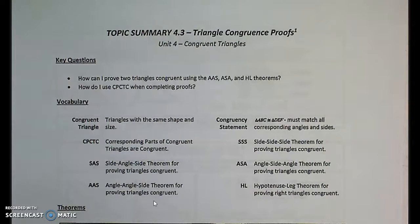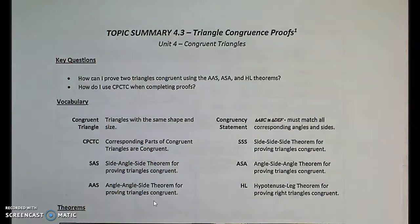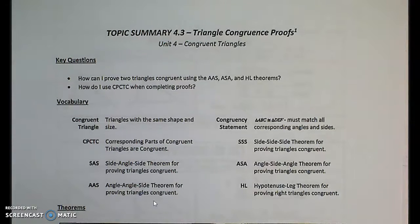Key questions: How can I prove two triangles congruent using AAS, ASA, and HL theorems? In the previous packet we used two theorems, SSS and SAS. We're going to expand on that with three new theorems. And we'll also cover how to use CPCTC — Corresponding Parts of Congruent Triangles Are Congruent — when completing proofs.